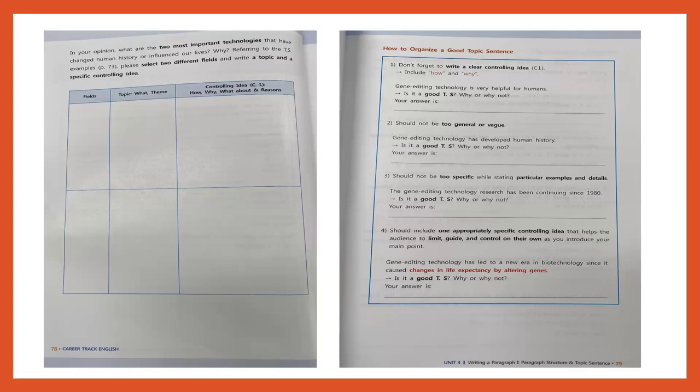On page 78, you could answer this one. It says: 'In your opinion, what are the two most important technologies that have changed human history or influenced our lives? And why?' Think about your field, think about your major, and think about some important technologies in your field and how they have improved or influenced our lives. The field is going to be your major, and then you can think about topic sentences — basically just introducing the topic and giving a little more info in the controlling idea with how, why, what, or some reasons.